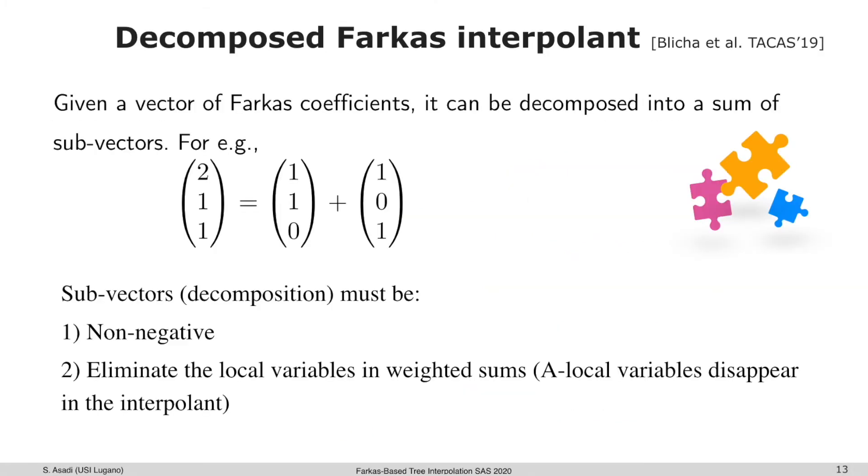The fourth binary interpolation algorithm that has been introduced recently is called decomposing Farkas interpolant, and it has been shown to be very useful. This approach produces an interpolant that is a conjunction of possibly more than one component of Farkas interpolant. For instance here, by decomposing the Farkas coefficients vector into two subvectors such that these subvectors should be non-negative and also eliminate the local variable in the weighted sum in the resulting interpolant.